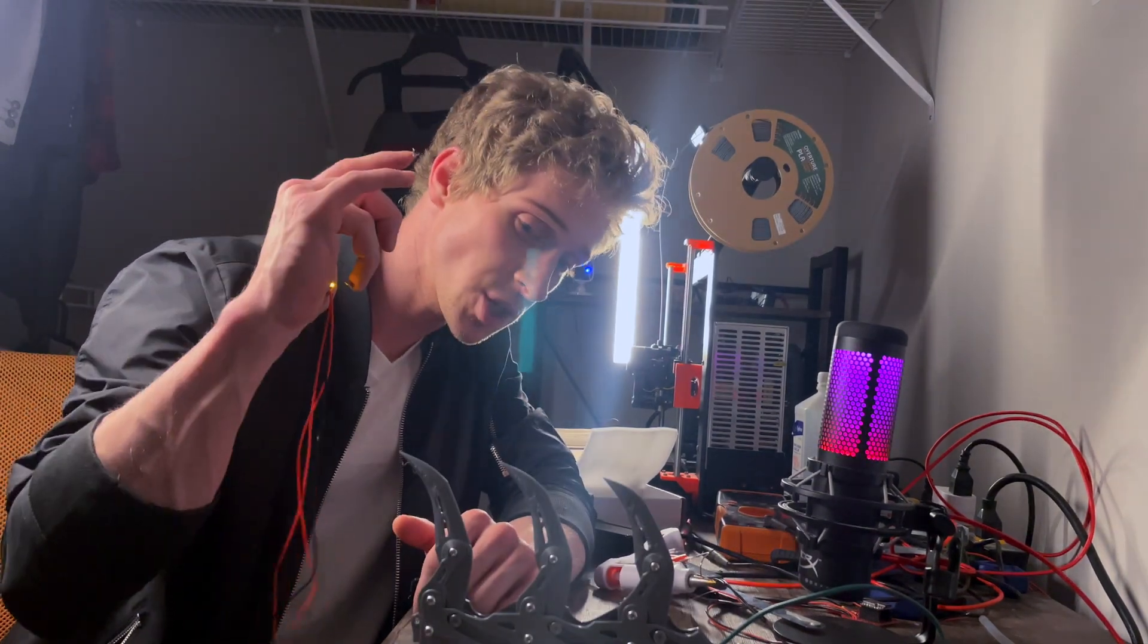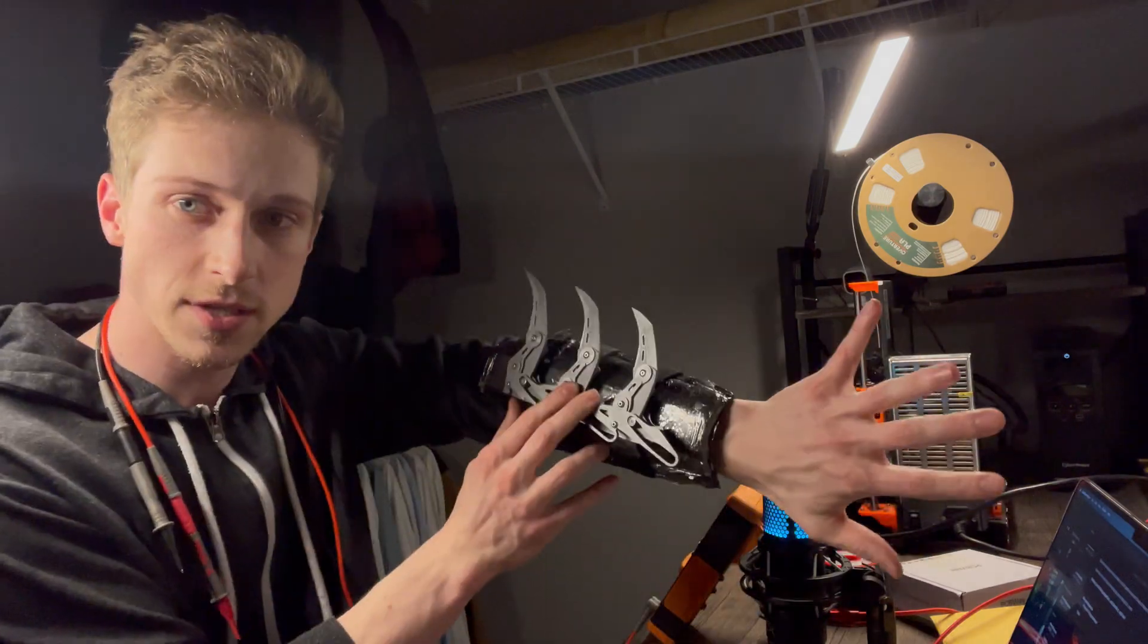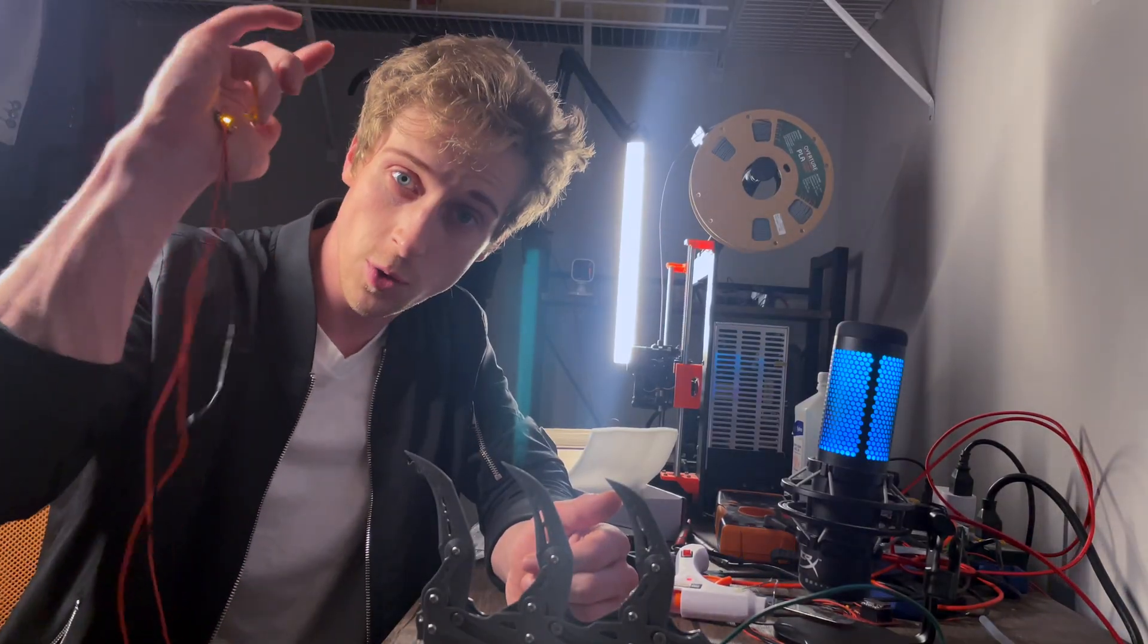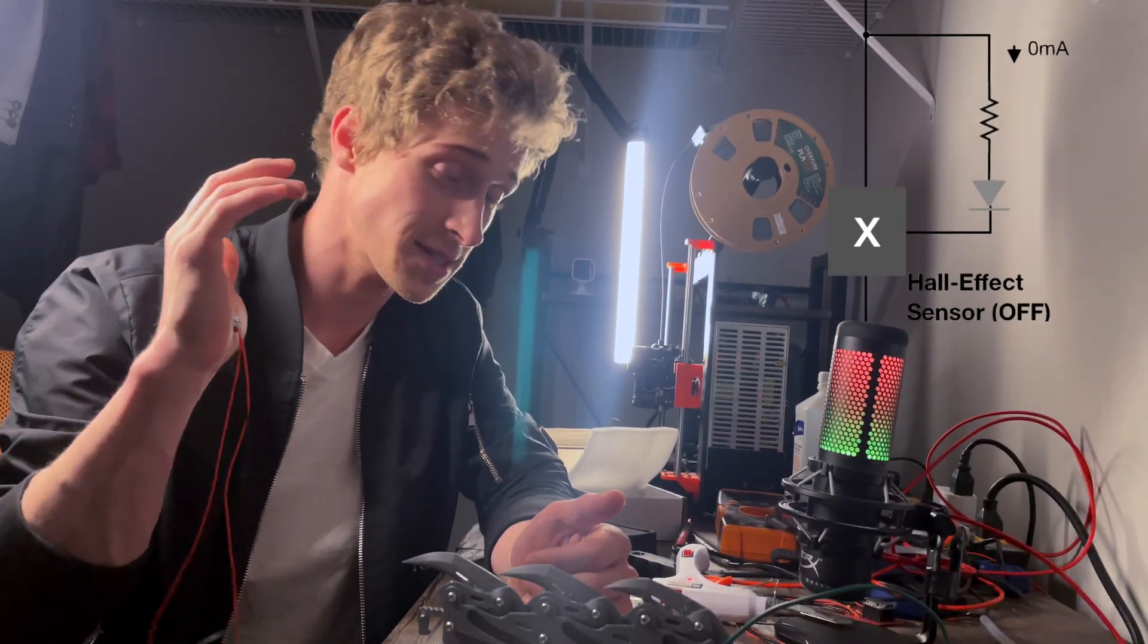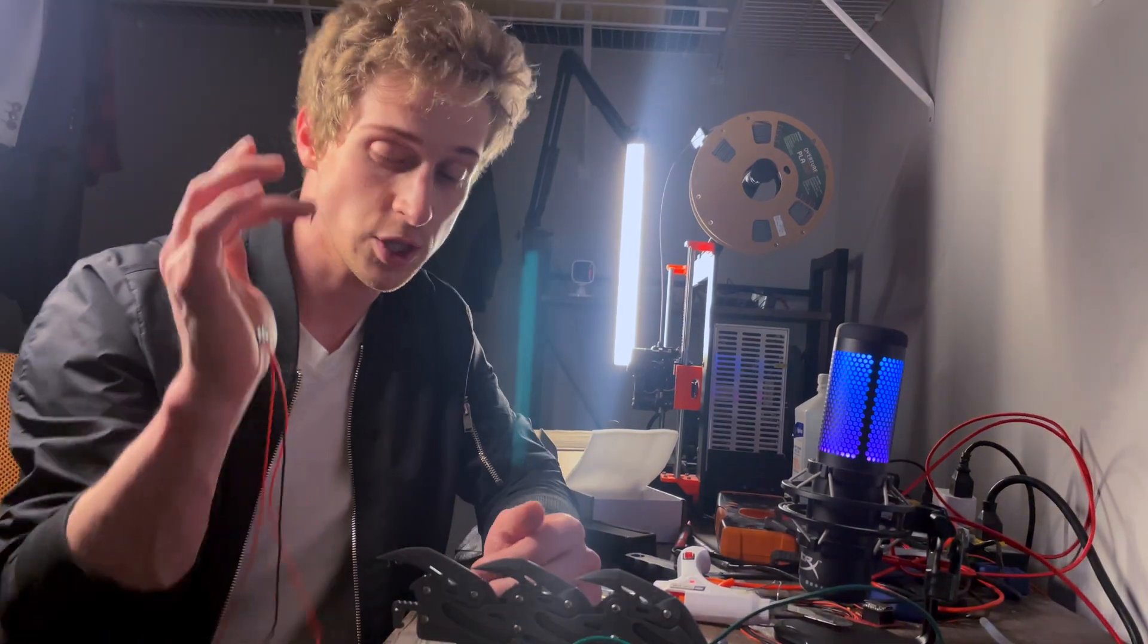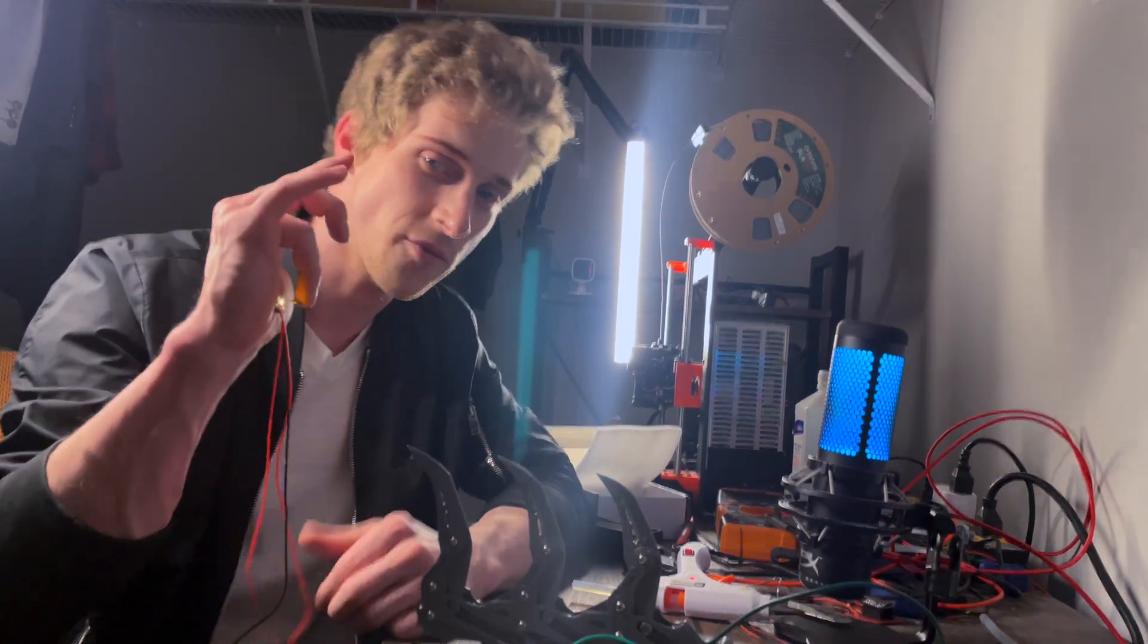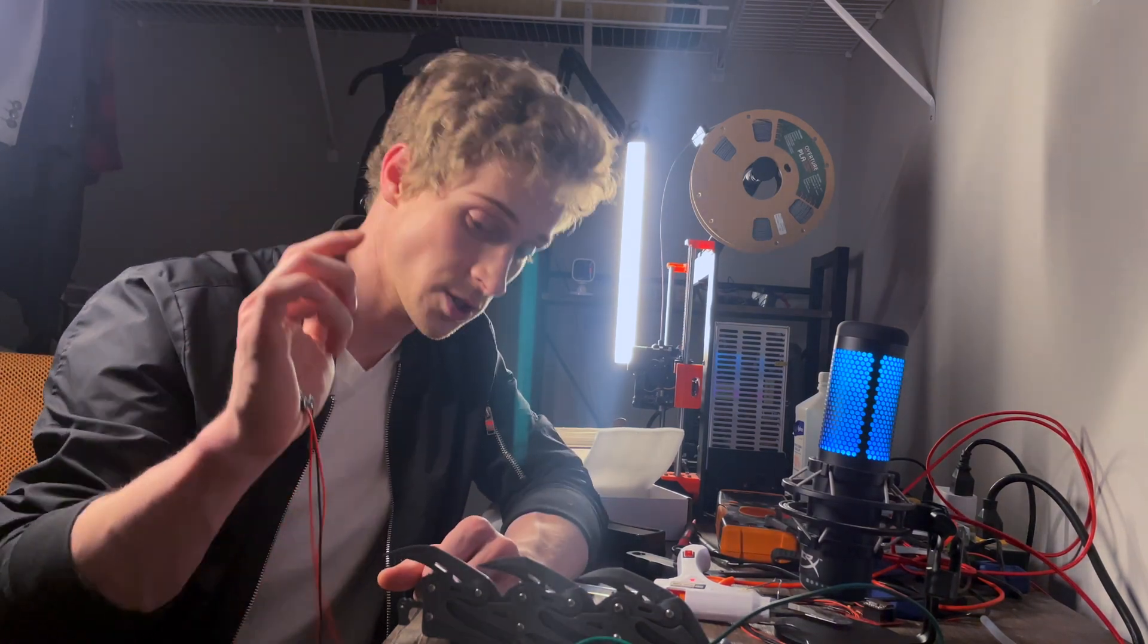In this video we're going to go over how the hand gesture recognition system works. The concepts from the initial video still apply where I have two hall effect sensors in here that provide really fast snappy action, but I don't want this to be momentary action. It should just be that I do the gesture, they eject, I do the gesture again, they retract.